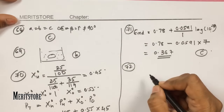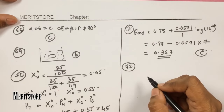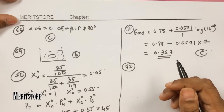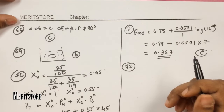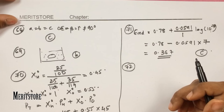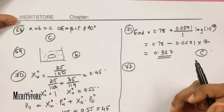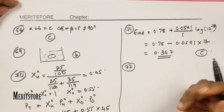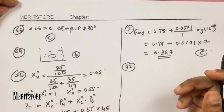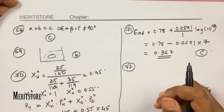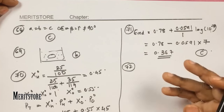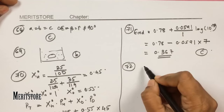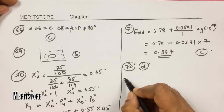Question number 72: which factor does not influence the rate of reaction? Nature of reactants, concentration, and temperature all affect the rate of reaction. However, molecularity — the number of particles taking part in a reaction — does not influence the rate of reaction. Hence option D.